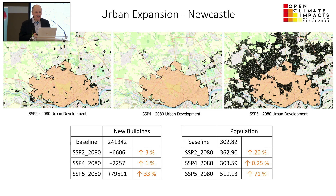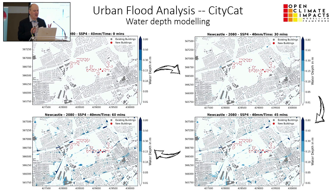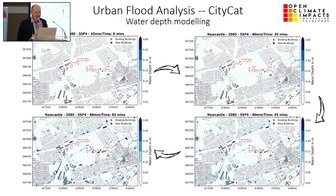Moving now to an illustration of city flooding, drawing on Newcastle. This is the CityCat model, showing an extreme event over one hour with roughly 15-minute time steps. Working at two-meter resolution, you can watch the build-up with time of areas that have been inundated. We also have the flood depth, so we can see what of the existing and new built environment is being impacted by that event.